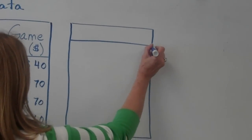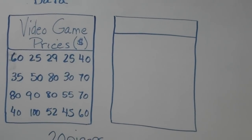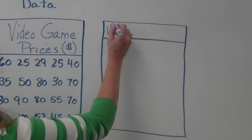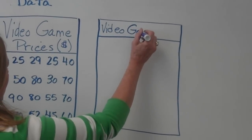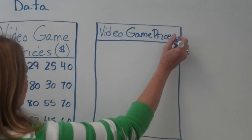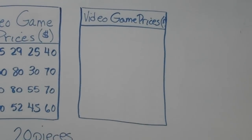And we are going to title that table the exact same title as our data over here. We'll call it our Video Game Prices. Again, we are showing this in dollars, so make sure you do label that correctly.